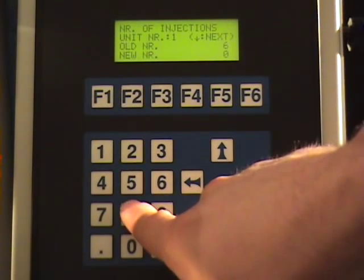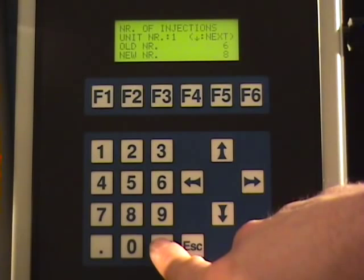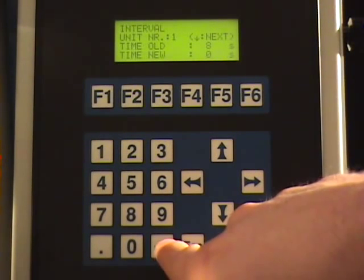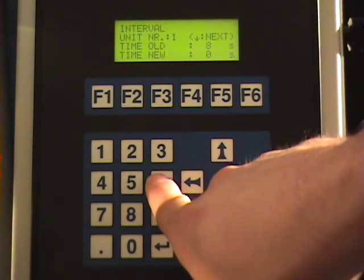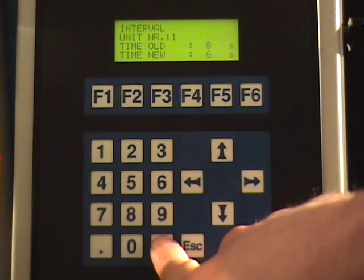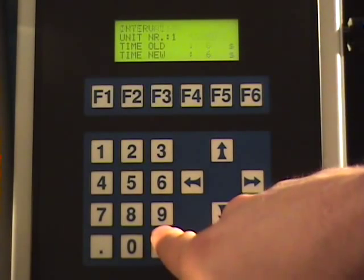Now you must specify the number of injections you wish to be performed. The last parameter of the cleaning menu is the interval between the solvent injections. This is to allow the pump sufficient time to drain the solvent from the tube.